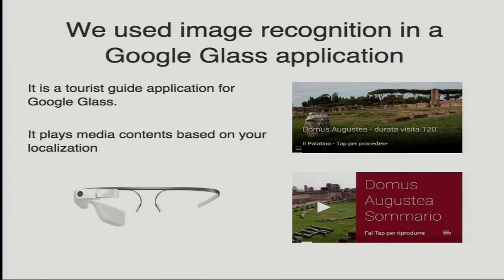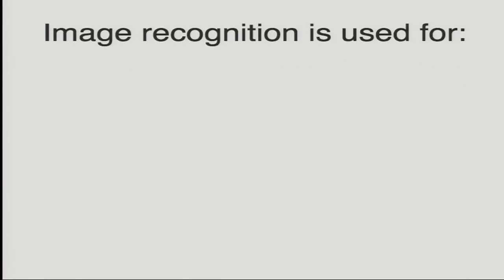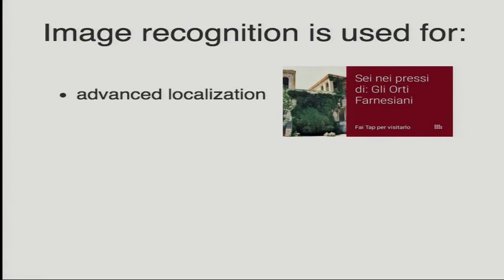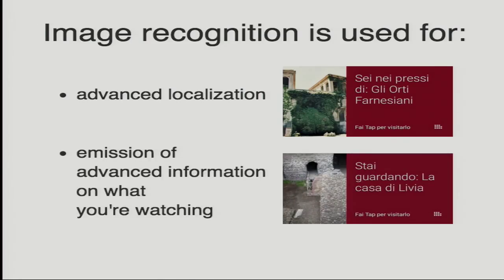We use image recognition in a Google Glass application. It is a tourist guide application that plays media contents based on localization. For now it was tested in the archaeological area of the Palatino. In this application, image recognition is used for advanced location based on what you're watching and based on the planimetry of the place, and is used to play advanced information about the artwork you're watching.